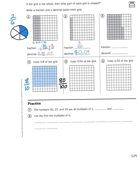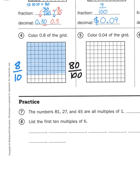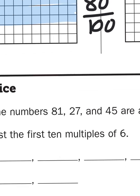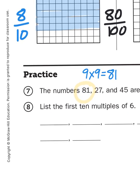Finally, looking at the problems down at the bottom, we are exploring concepts of multiples — this is review from unit two. The numbers 81, 27, and 45 are all multiples of one, and what else? You have to think about what you can multiply together to get to each of these products. For example, 81: what are some combinations of numbers I can use to get to 81? Well, 9 times 9 gives me 81, so I know that 81 is a multiple of 9.